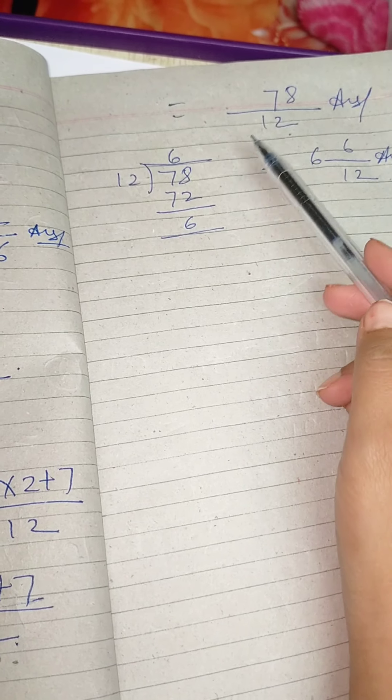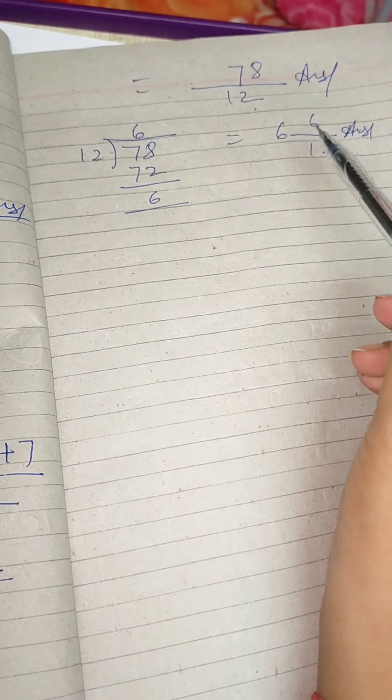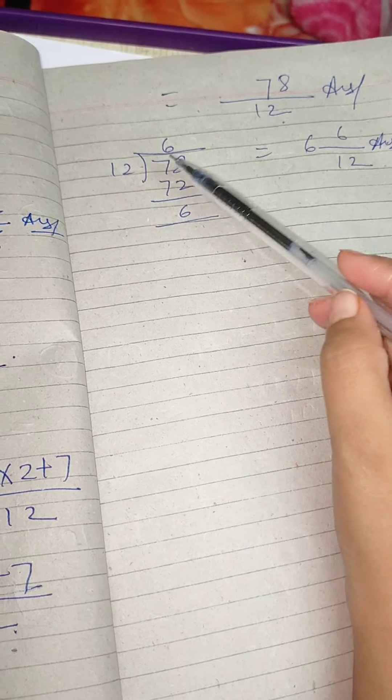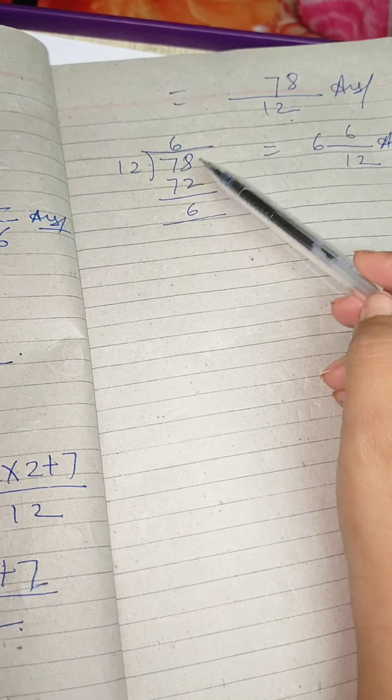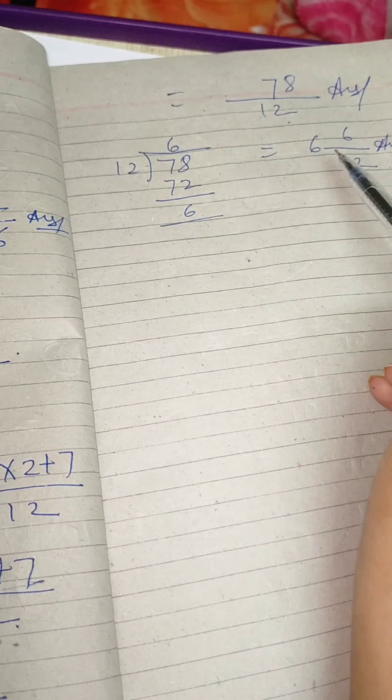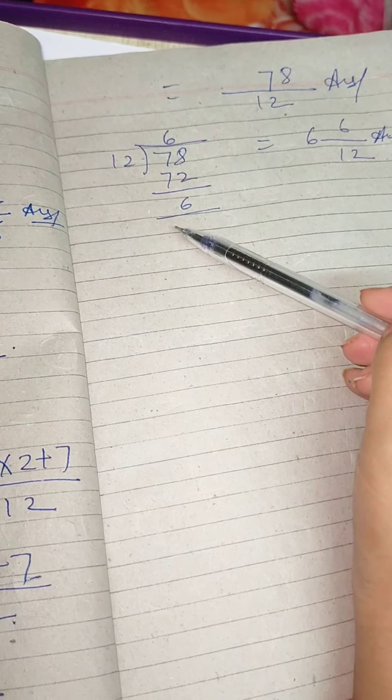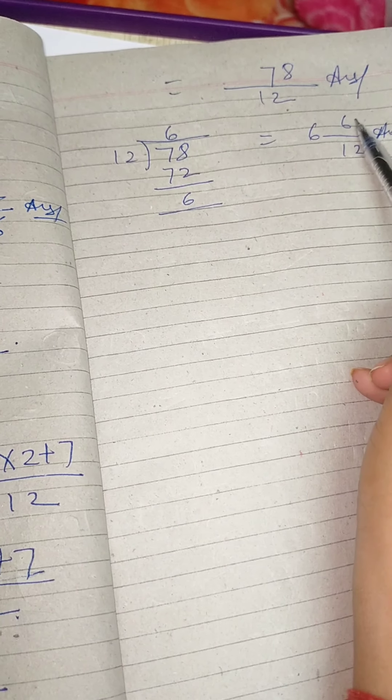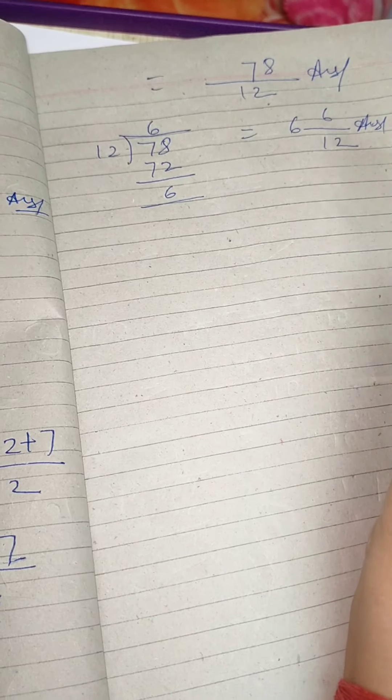This is also an answer. If you want mixed fraction, divide 78 by 12. 12 sixes are 72. Remainder is 6. 6 is the quotient, 6 is the remainder, so 6 goes here, 6 goes here, divided by 12. This will be your answer.